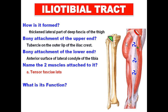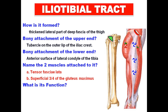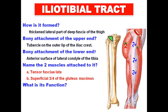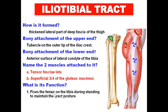These two muscles have different nerve supplies: tensor fascia lata is supplied by the superior gluteal nerve, and gluteus maximus by the inferior gluteal nerve. The function of the iliotibial tract is that through the attachment of these two muscles, they stretch and tense the iliotibial tract to fix the femur on the tibia during standing. It also assists in extension of the knee joint.